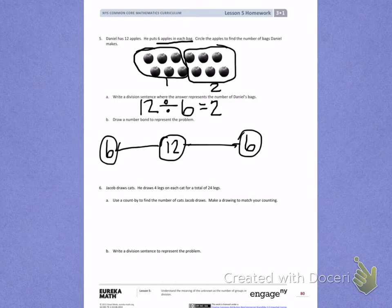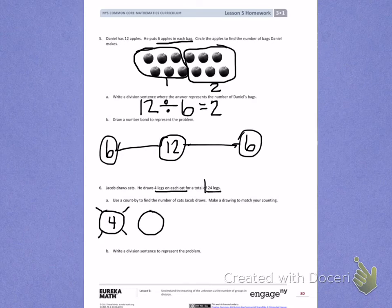Number 6. Jacob draws cats. He draws 4 legs on each cat for a total of 24 legs. Letter A. Use a count by to find the number of cats Jacob draws. Make a drawing to match your counting. So Jacob has a total of 24 legs for cats, and he puts 4 legs on each cat. So I'm going to start with 1 cat, and he puts 1, 2, 3, 4 legs on that cat. I need to continue counting until I get to 24. Another 4 legs will give me 8 legs.